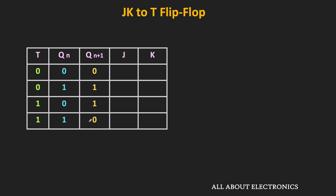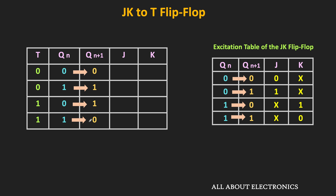To get all these output transitions, we find the required J and K inputs using the excitation table of the JK flip-flop. For the 0-to-0 transition, J is 0 and K is X. For the 1-to-1 transition, J is X and K is 0. For the 0-to-1 transition, J is 1 and K is X. For the 1-to-0 transition, J is X and K is 1. In this way, we obtained the required J and K inputs for all transitions.